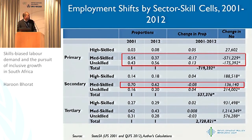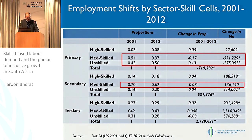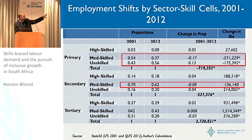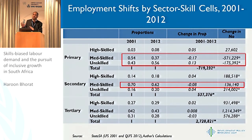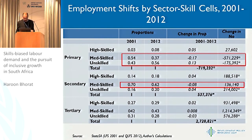At the skills level, you've got medium-skilled employment declines in the primary sector. If you look at the sector-occupation or sector-skill cells, you see job destruction in the primary sector for medium-skilled workers, and the same in the secondary sector. And in a sense, that's where we start thinking: if it's medium-skilled workers in manufacturing, is there something going on about outsourcing of these jobs? Is there something about automation, foreign competition, and so on causing this deterioration in employment in that particular skills category?